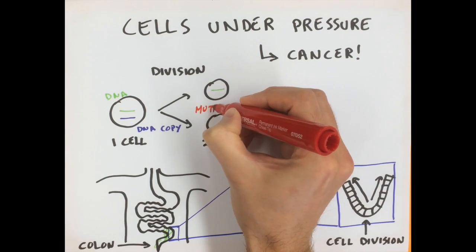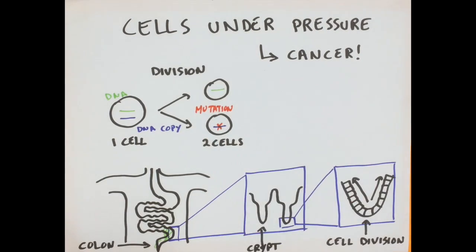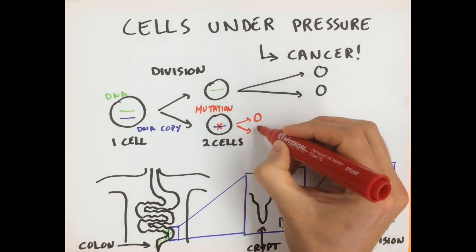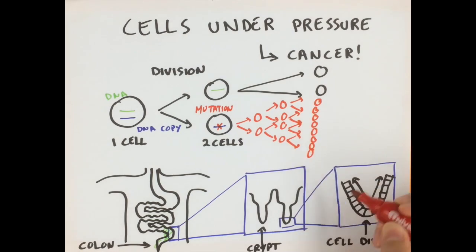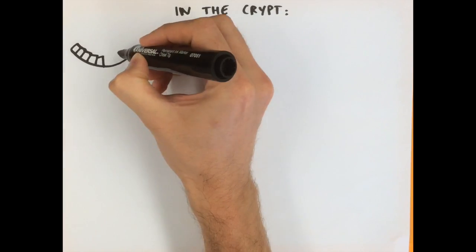Sometimes a mistake is made when the DNA is copied. This error is called a mutation. Some mutations cause cells to divide too quickly. This is how tumors begin, with mutant cells evolving faster than normal cells.